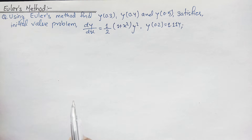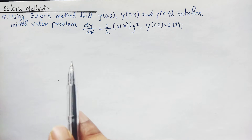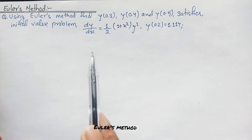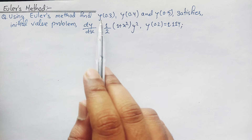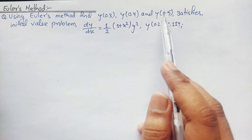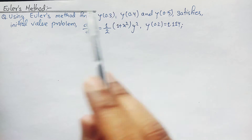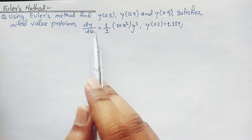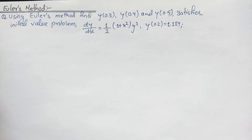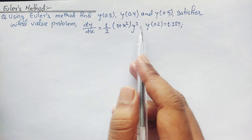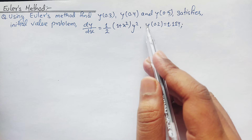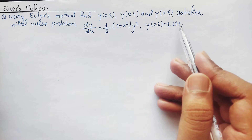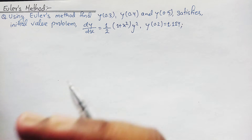Hey everyone, welcome back to Civil Learning Online YouTube channel. Today in this video I'm going to discuss Euler's method. I have selected a problem in which we are asked to find the value of y(0.3), y(0.4), and y(0.5) using Euler's method. We are given a function: dy/dx = (1/2)(1 + x²)y², and the boundary condition y(0.2) = 1.114.